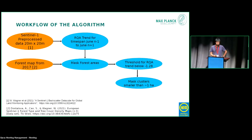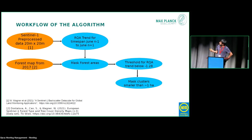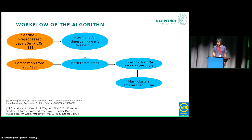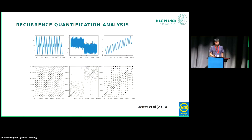A quick overview of the algorithm: we start with Sentinel-1 preprocessed data provided by the Wagner group, which is in the Equi7 grid. Then we compute the recurrence quantification analysis trend from June of the previous year to June of the next year, so we have two years of data. Then we mask forest areas based on a forest map on the same Sentinel-1 data. We threshold the RQA trend and then cluster, discarding everything smaller than 30 pixels, which is roughly one hectare in size.